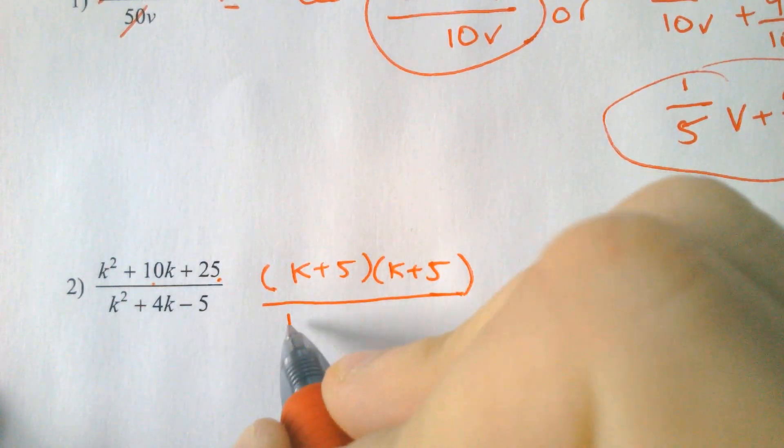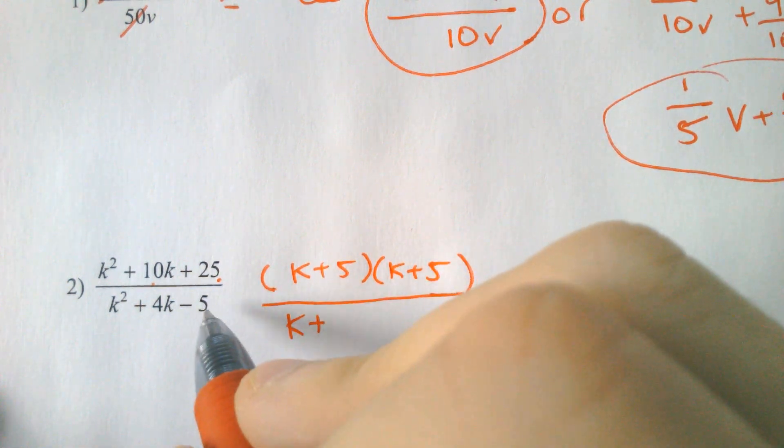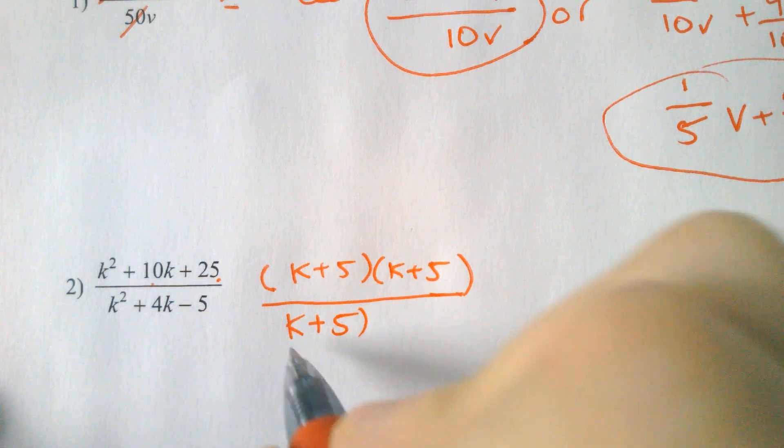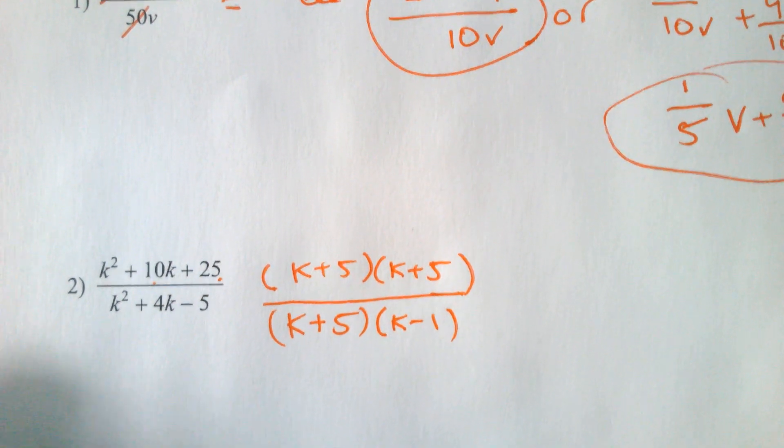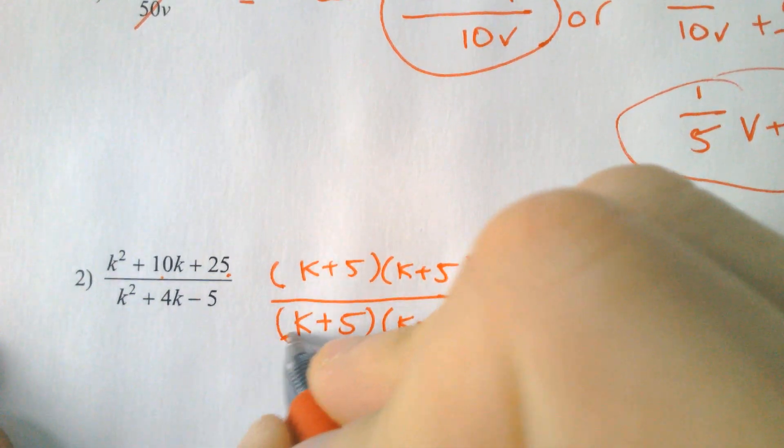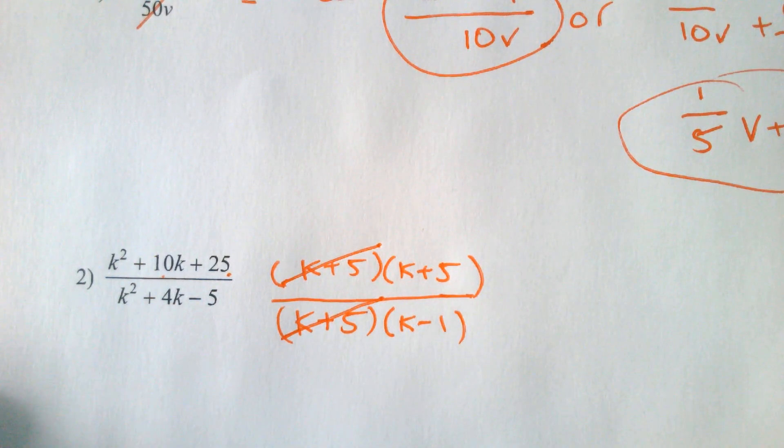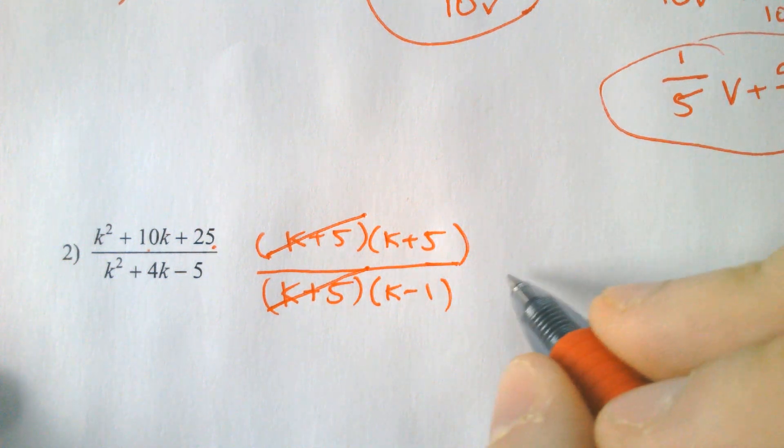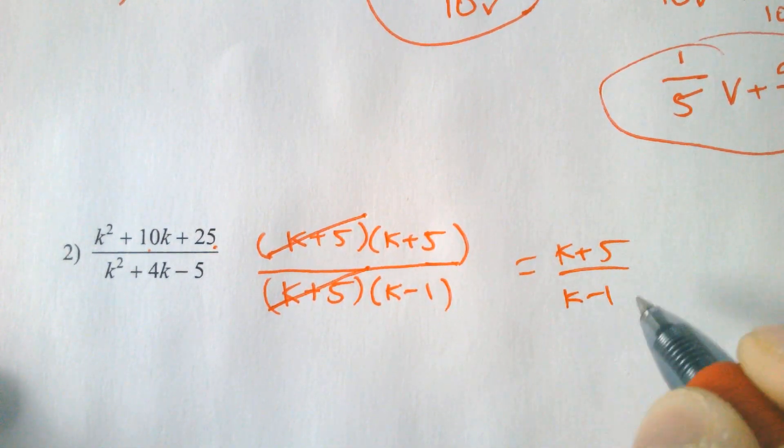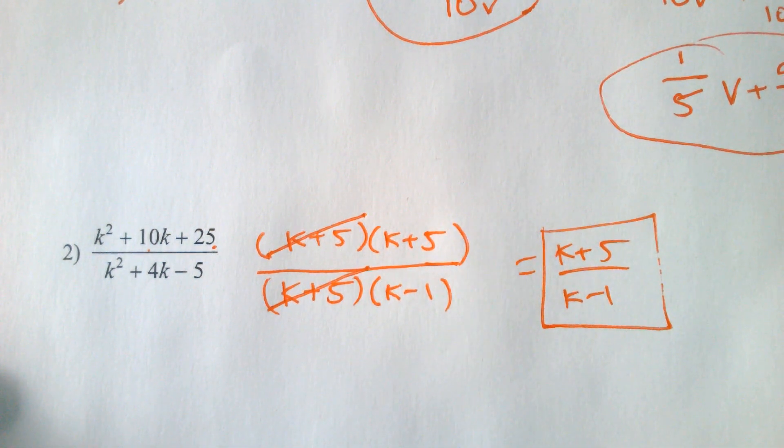And then we factor the bottom of the fraction, which would end up being what multiplies to negative 5 but adds to positive 4, and that would be positive 5 and negative 1. And then typically, one of these things is going to cancel. And here we got 1 for 1. You cannot cancel out more than 1. So this is going to be our final answer, which is k plus 5 over k minus 1.